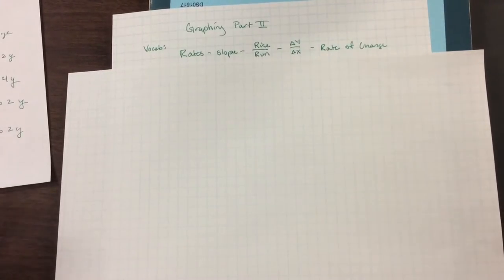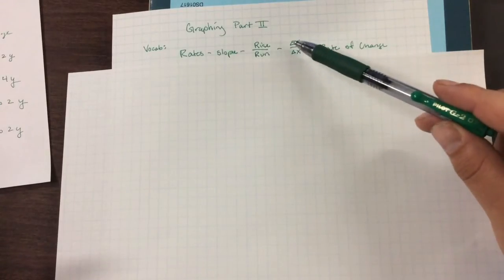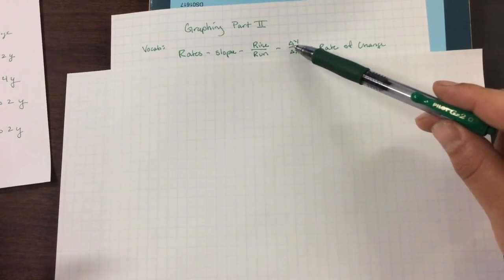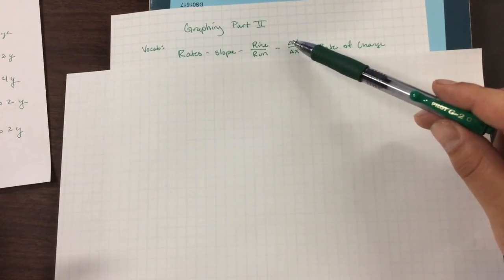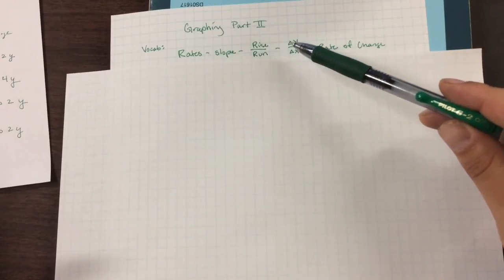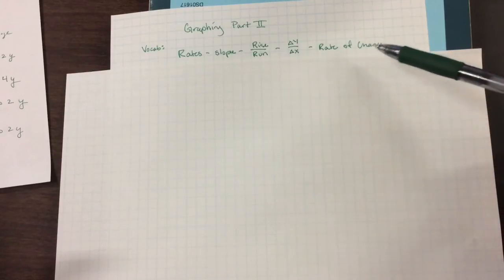So there's slope, there's rise over run. If you've never seen this triangle before, that means change. It's a scientific symbol, a delta. It's delta y and delta x. So there's this change in y divided by the change in x, or rate of change.